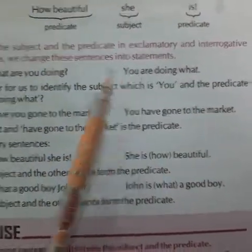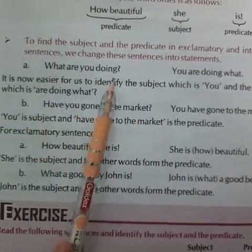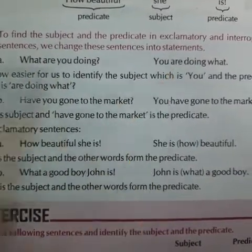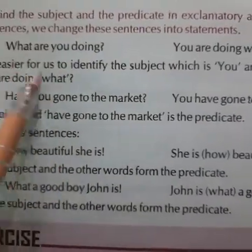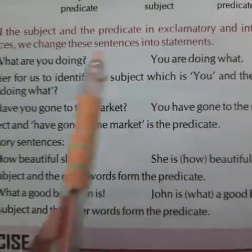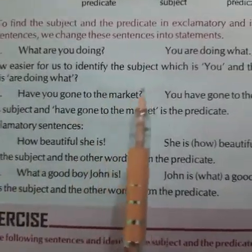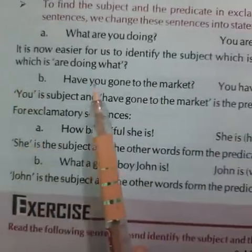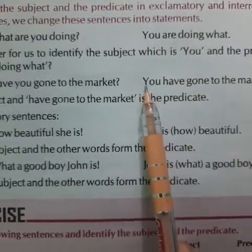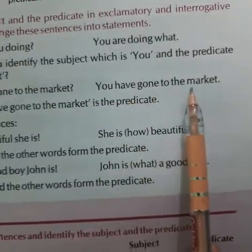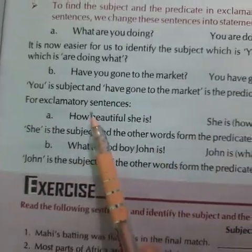To find the subject and predicate in exclamatory and interrogative sentences, we change these sentences into statements. For example, the interrogative sentence 'What are you doing?' is changed into a simple statement: 'You are doing what?' By this way, you can recognize the subject easily. It is now easier to identify the subject, which is 'you,' and the predicate, which is 'are doing what.' Similarly, 'Have you gone to the market?' becomes 'You have gone to the market.' So 'you' is the subject and 'have gone to the market' is the predicate.